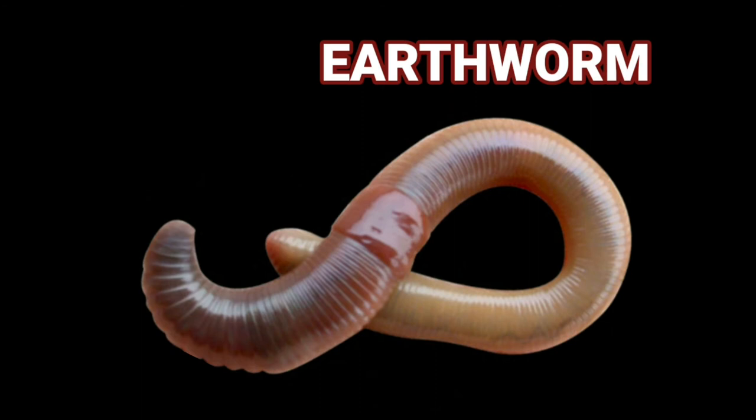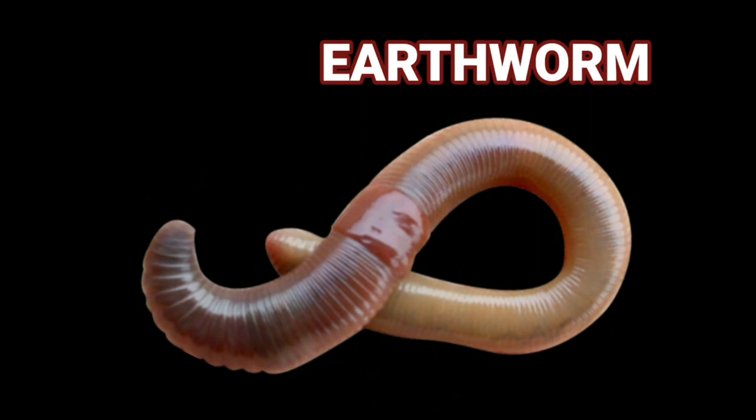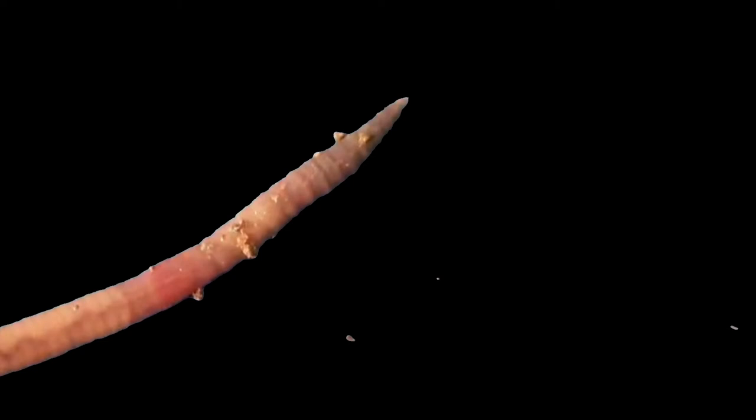Gait of an earthworm. The body of an earthworm is made up of many rings and joints, end to end. An earthworm does not have bones. It has muscles that help to extend and shorten the body.